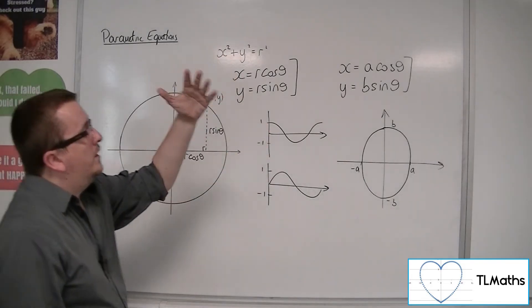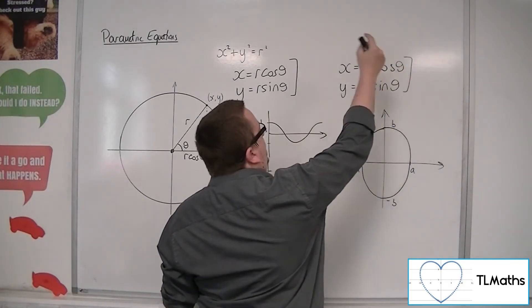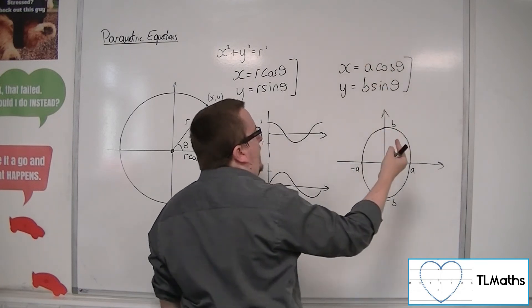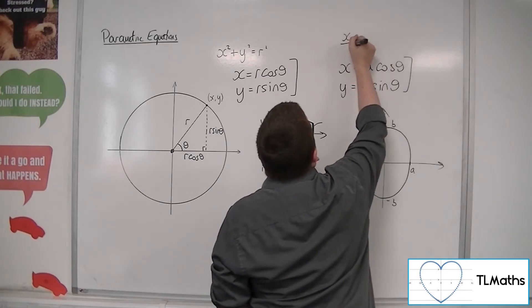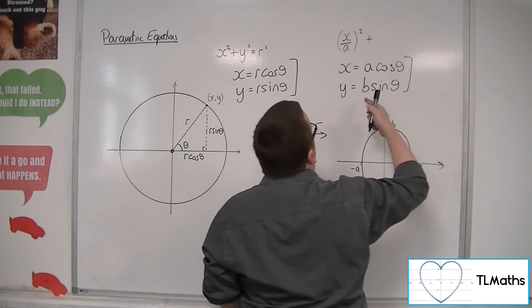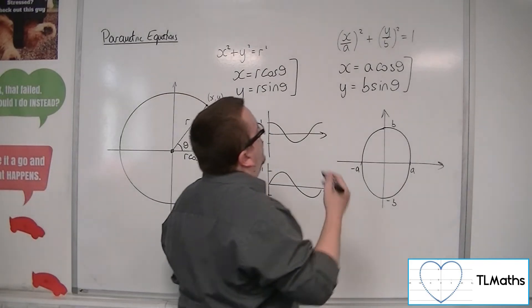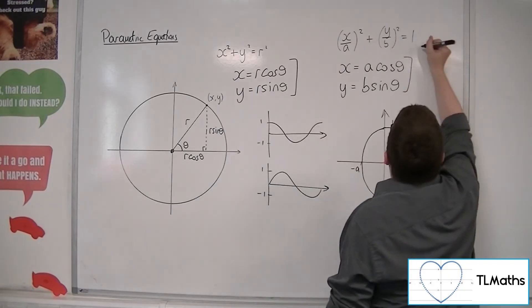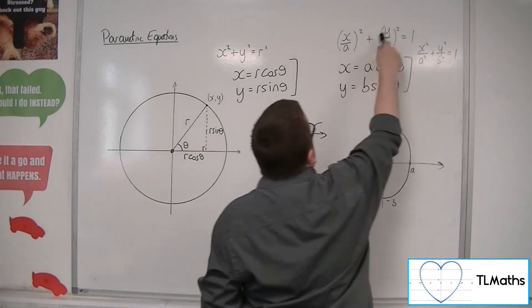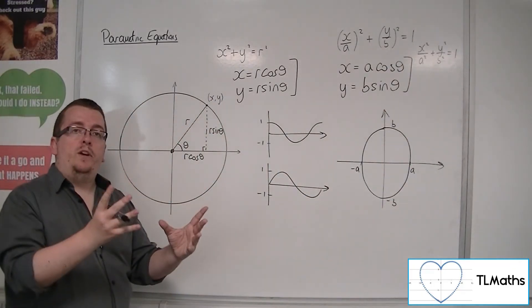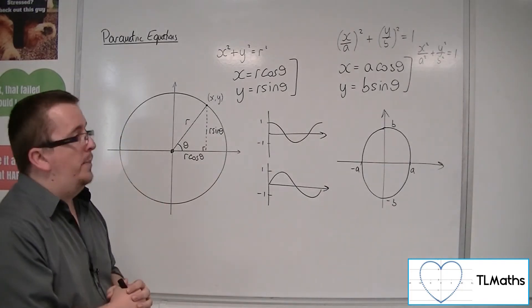So what would be the Cartesian equation that goes with that? Well, if you rewrote these as cos equals x over a and sin equals y over b, you could substitute them into sin squared plus cos squared equals 1. So cos squared is x over a squared, and sin squared is y over b squared, equal to 1. Or you could write it as x squared over a squared plus y squared over b squared equals 1. Either of those are the general Cartesian equation of an ellipse centred at the origin with width 2a and height 2b.